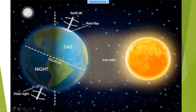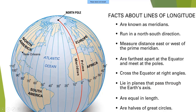When some part of the Earth receives sunlight, that region experiences daytime, while the other part that does not receive sunlight experiences nighttime — so roughly 12 hours day and 12 hours night, totaling 24 hours.